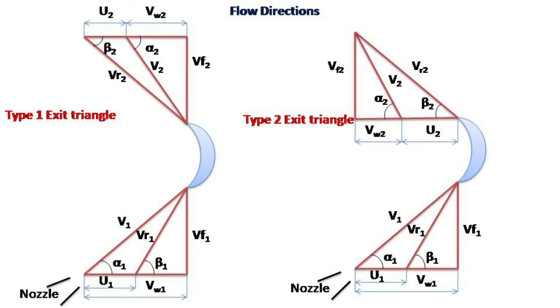I use both the velocity triangles here to explain the flow direction. In both the cases, inlet triangles are the same. The nozzle is placed at the left extreme corner from which the fluid leaves at v1 velocity. This velocity v1 splits into vw1 and vf1 and moves the blade at u1 velocity. So all the velocities v1, vr1, vf1, vw1, and u1 directions are shown towards the apex point.